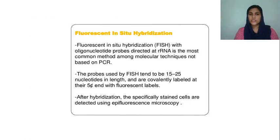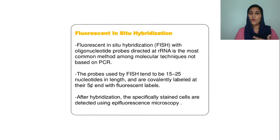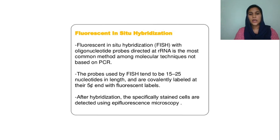In FISH — fluorescent in-situ hybridization — the main component is oligonucleotides. This is the most common method using RNA. The hybridization step involves epifluorescence detection.